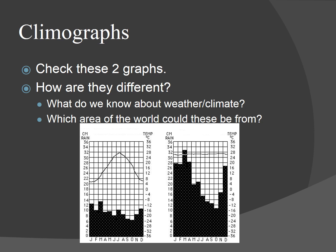Look at these two graphs and see the difference between them. The bars represent rainfall and the lines represent temperature. In the first graph, the temperature seems to fluctuate, but the level of rain stays around the same. In the second graph, the temperature stays fairly constant, but there is a big drop-off in rainfall during a particular season — showing a stronger impact. Based on this, which area of the world could this be from?